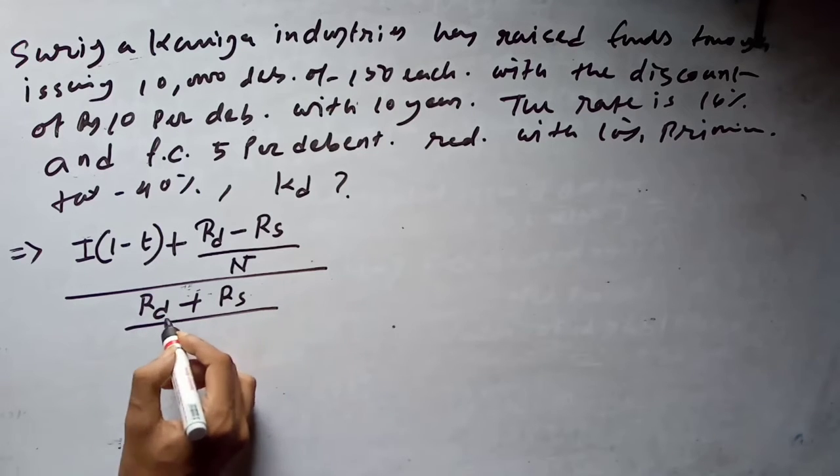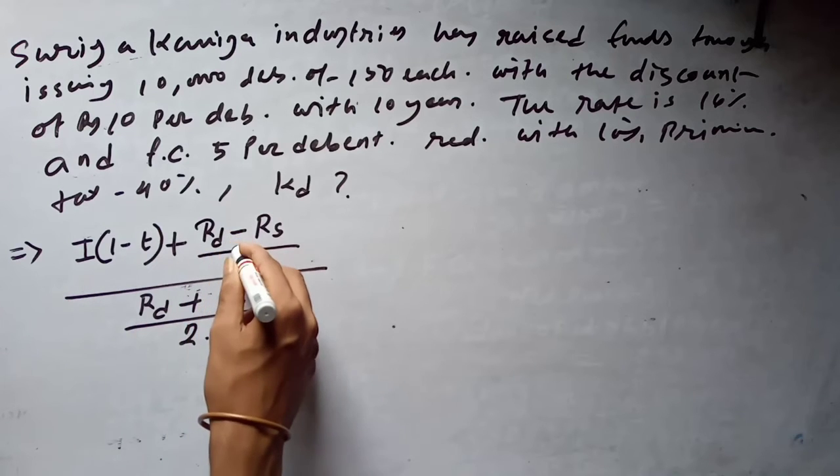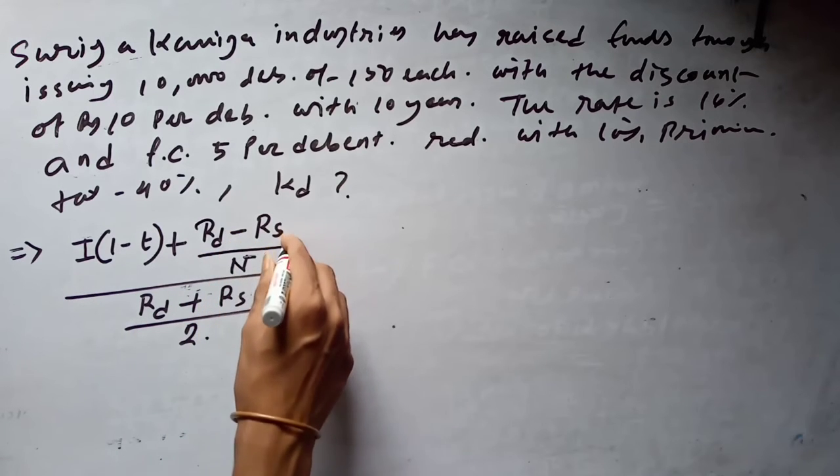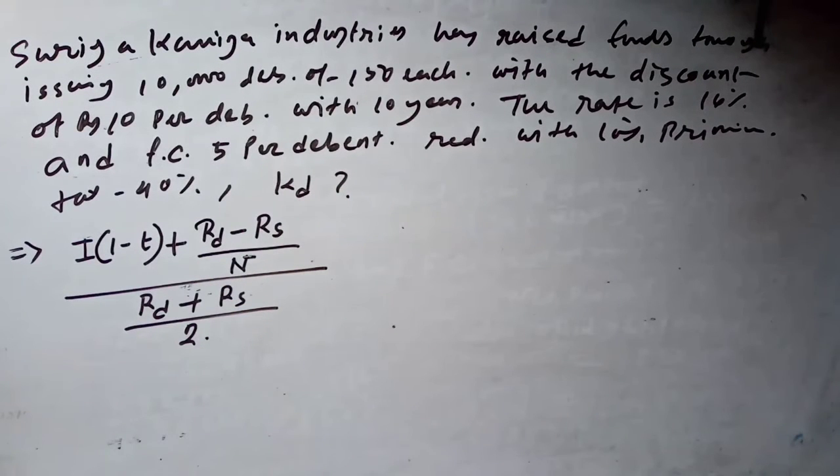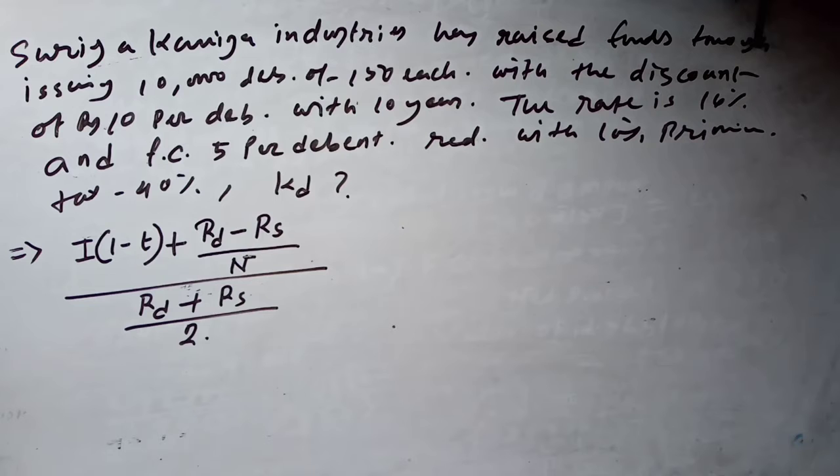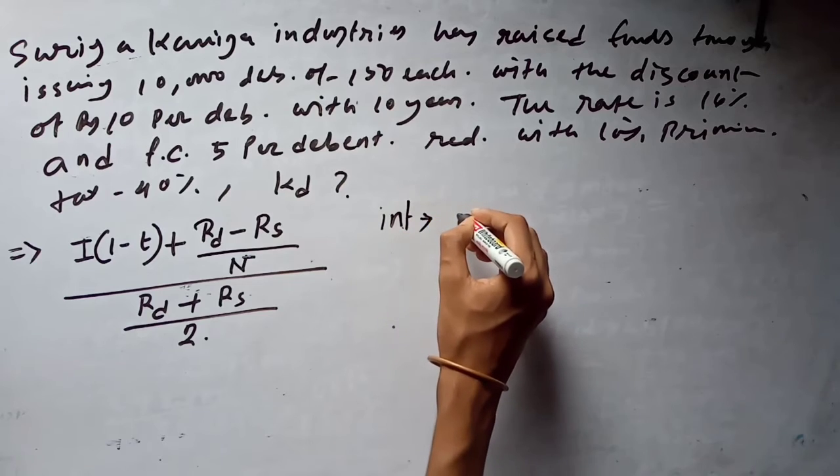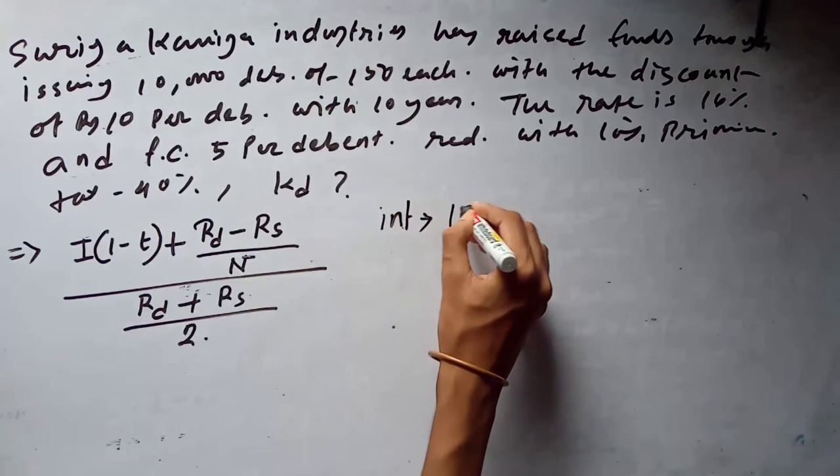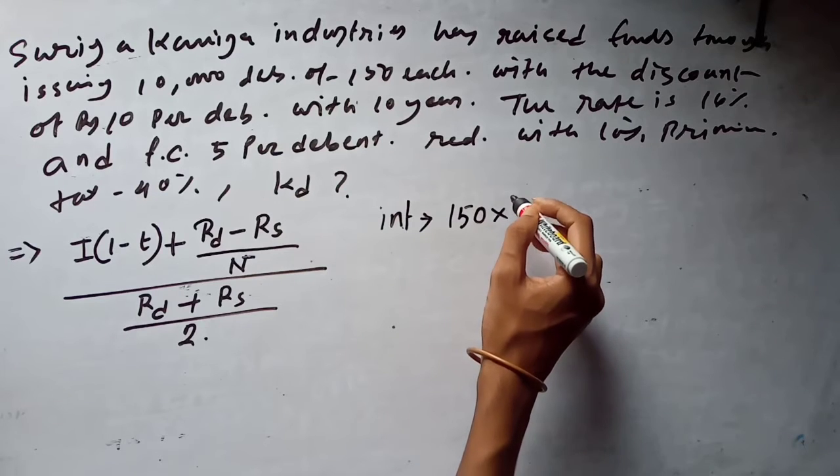Divided by the average investment of debt capital as the redeemable price plus issuing price by 2. Now what we have to calculate: the interest, the redeemable price of the share, the issuing price of the share. The number of years is given, then we can solve the problem. What is the annual interest?